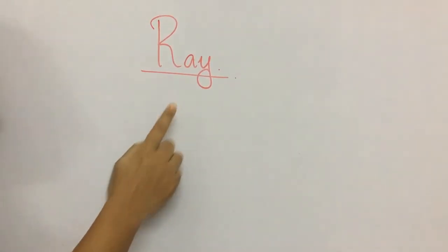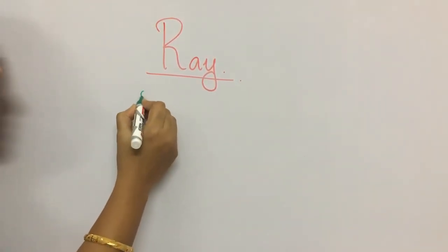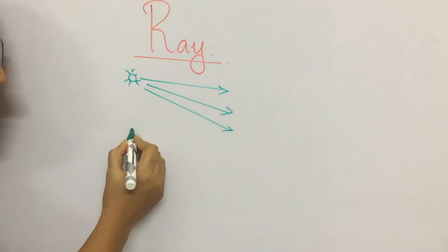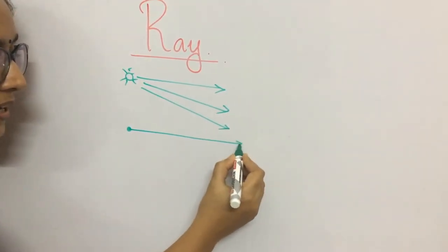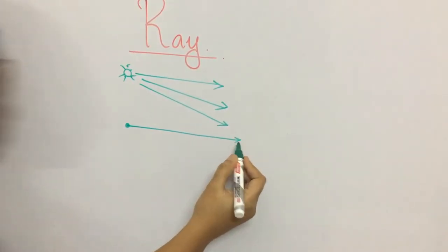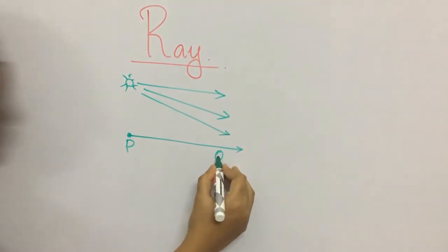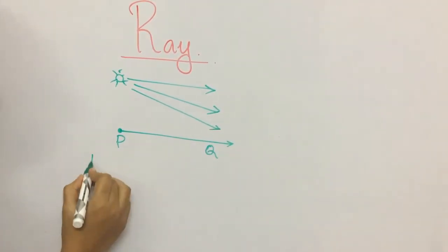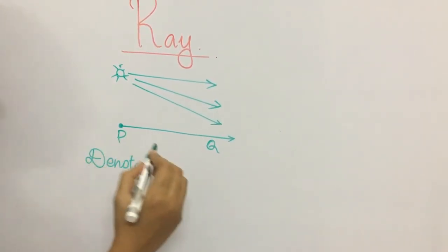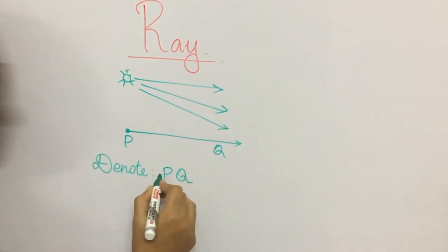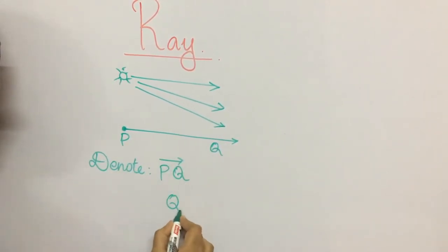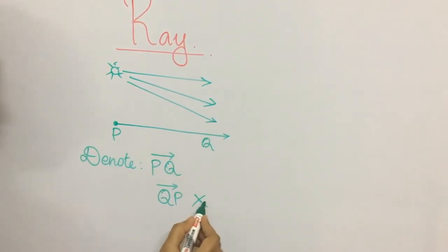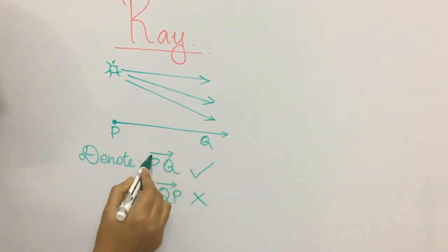Moving on to ray — you would have come across the word sun rays, which means from the sun the rays pass everywhere, endlessly in all directions. That means it has a starting point, which is the sun, and it extends endlessly. So a ray has a starting point but no ending point. I am going to give a name like PQ. We cannot measure the length of a ray because it extends endlessly in one direction. We denote a ray using an arrow, so I represent it as PQ with an arrow on top. I cannot represent it as QP because Q is not the starting point — only P is. So we represent it only as PQ with an arrow on top.